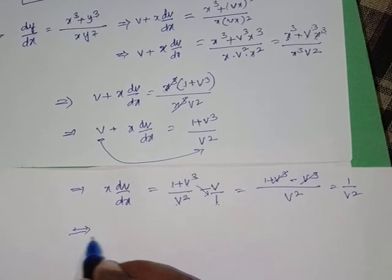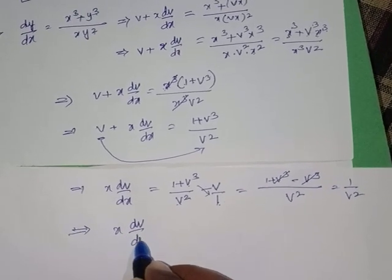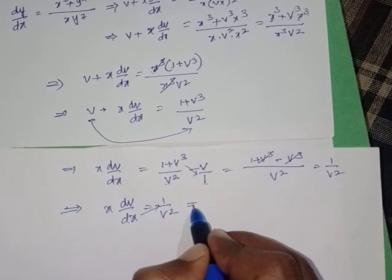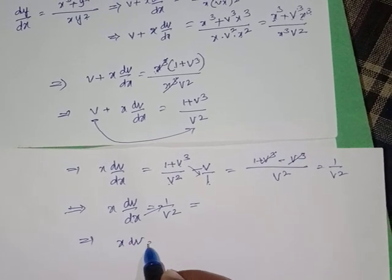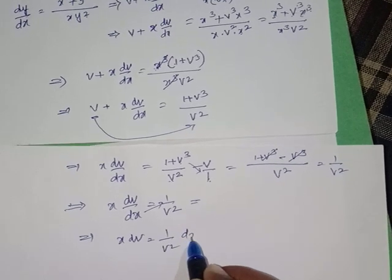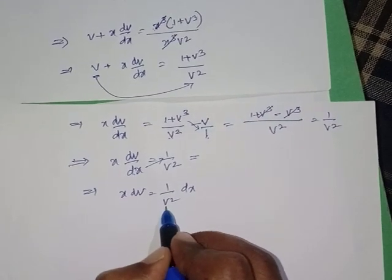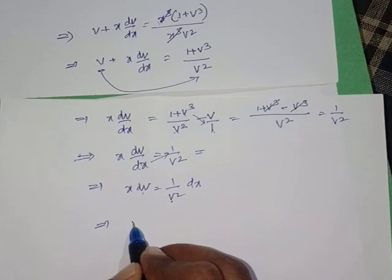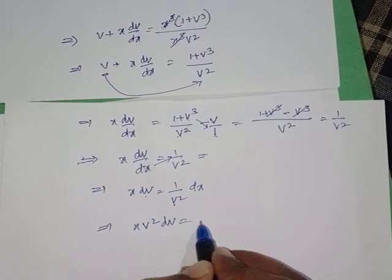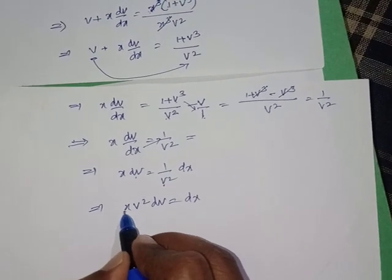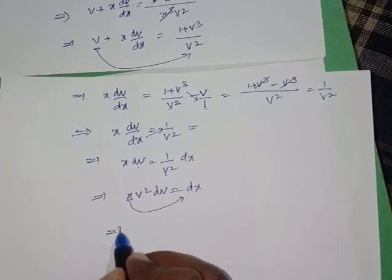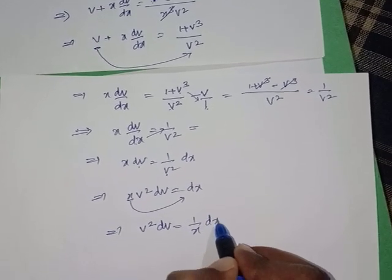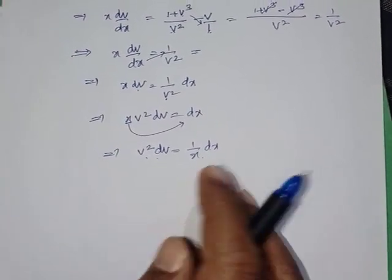So x·dv/dx = 1/v². Cross-multiplying: x·v²·dv = dx. Separating variables by transferring x: v²·dv = (1/x)·dx. The variables are now successfully separated.